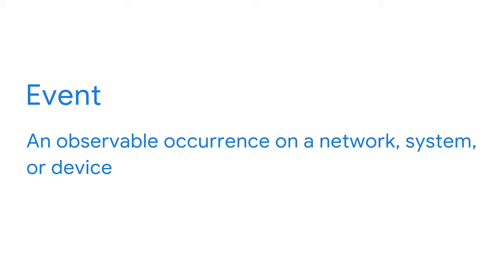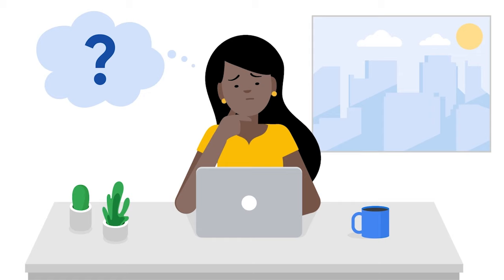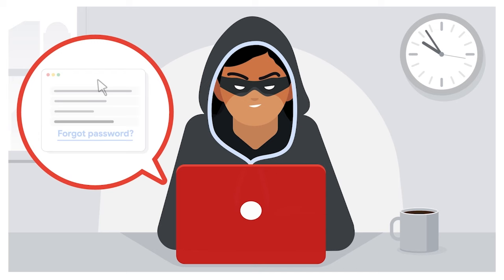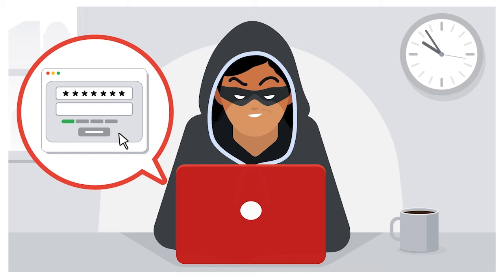Here's an example of an event: a user attempts to log into their email account but they can't because they forgot their password. The user then requests a password reset and successfully changes their password. This is an observable event because systems and applications log password reset requests. Now imagine that instead of the rightful owner, a malicious actor successfully initiated the password change and changed the account password. This would be considered both an event and a security incident — it's an event because it's observable, and a security incident because a malicious actor violated security policy to unlawfully access an account. Remember, all security incidents are events, but not all events are security incidents.